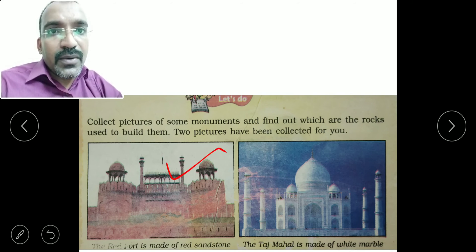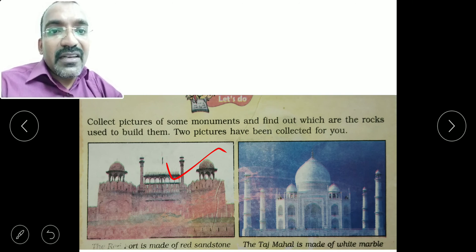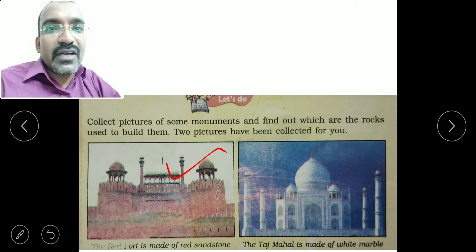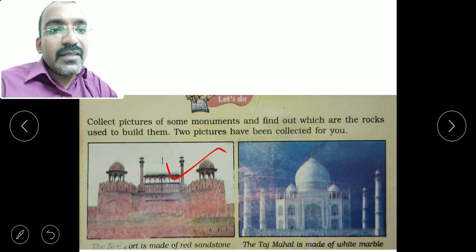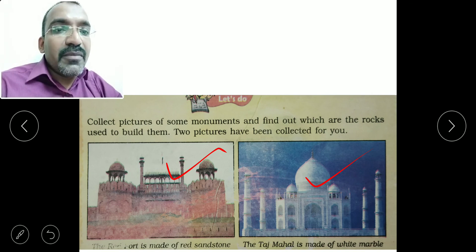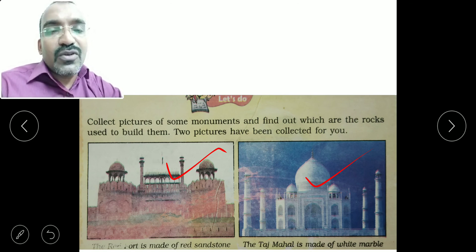The Red Fort is in Delhi, where the President addresses the nation on Independence Day. The Red Fort is made up of sandstone, which is a sedimentary rock. The Taj Mahal is made up of white marble, which is a metamorphic rock.